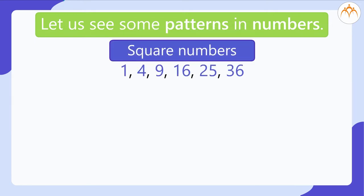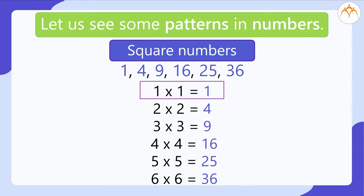Square numbers: 1, 4, 9, 16, 25, 36, etc. 1 multiplied by 1 is equal to 1. 2 multiplied by 2 is equal to 4. 3 multiplied by 3 is equal to 9. 4 multiplied by 4 is equal to 16. 5 multiplied by 5 is equal to 25. 6 multiplied by 6 is equal to 36 and so on.